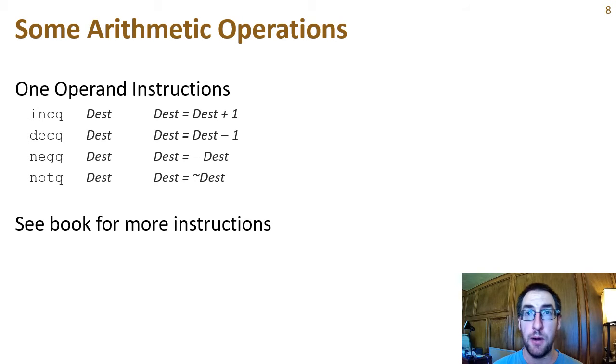Here are some of the more common one operand instructions you'll encounter. The INCQ instruction stands for increment, and it just adds one to its operand, which must be one of the general purpose registers. Similarly, DECQ decrements its operand by one. The NEGQ instruction does an arithmetic negation of its operand, that is, it writes the negative value of dest into dest. The NOTQ instruction writes the bitwise complement of dest into dest. In other words, each one of dest becomes zero and each zero becomes one. The book and online sources can provide the details of many more instructions.